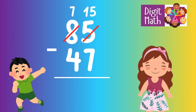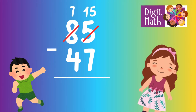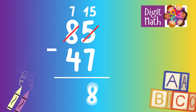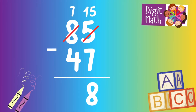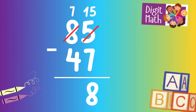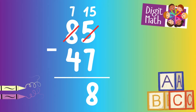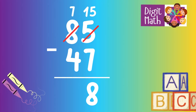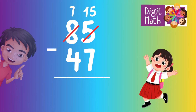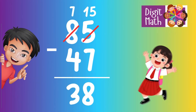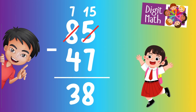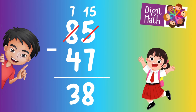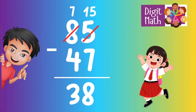Now we have 15 in the Units column. Subtract 7 from 15, which equals 8. In the Tens column, we now have 7. Subtract 4 from 7, which equals 3. So the final result is 85 minus 47 equals 38.